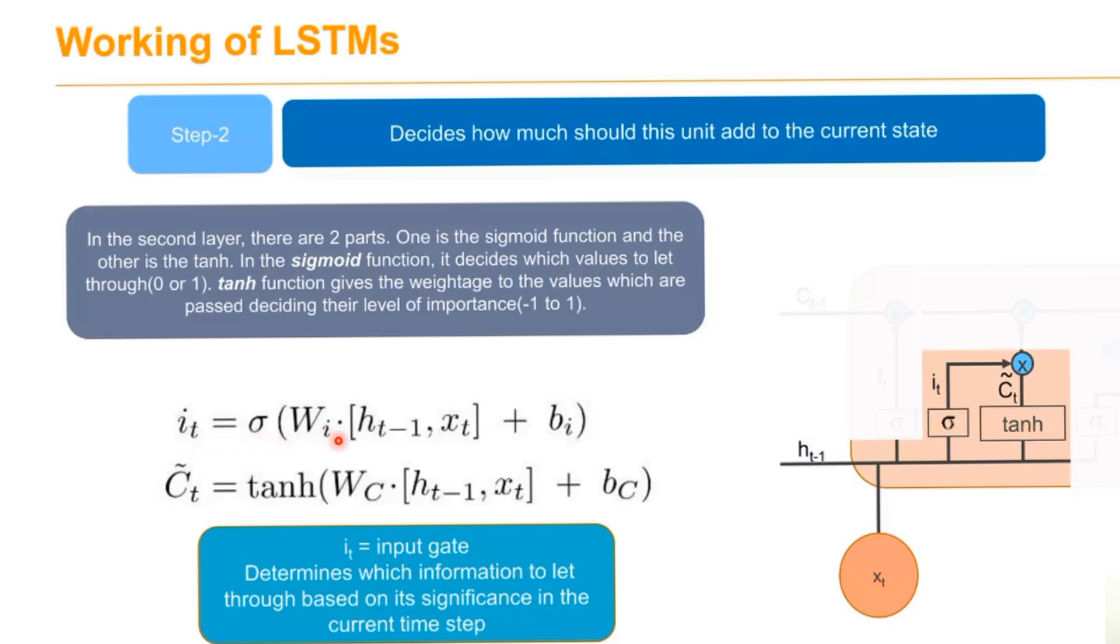The tanh gives weightage to the values which are passed, deciding the level of importance. This represents the input gate: sigma(W_i · [h_{t-1}, x_t] + bias). And C_t represents the tanh function.